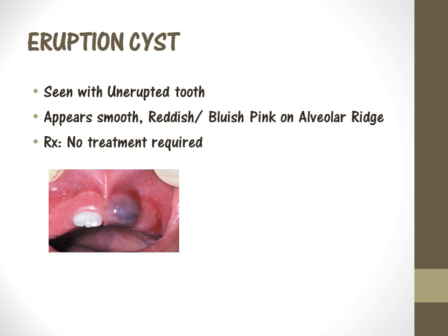The next cyst we are going to be talking about is the eruption cyst. Eruption cyst is usually associated with an unerupted tooth. It appears smooth, reddish or bluish-pink on the alveolar ridge. No treatment is required — it usually bursts when the tooth erupts by itself. However, if the parent or child is complaining about this cyst, then we can excise it and let the tooth erupt.